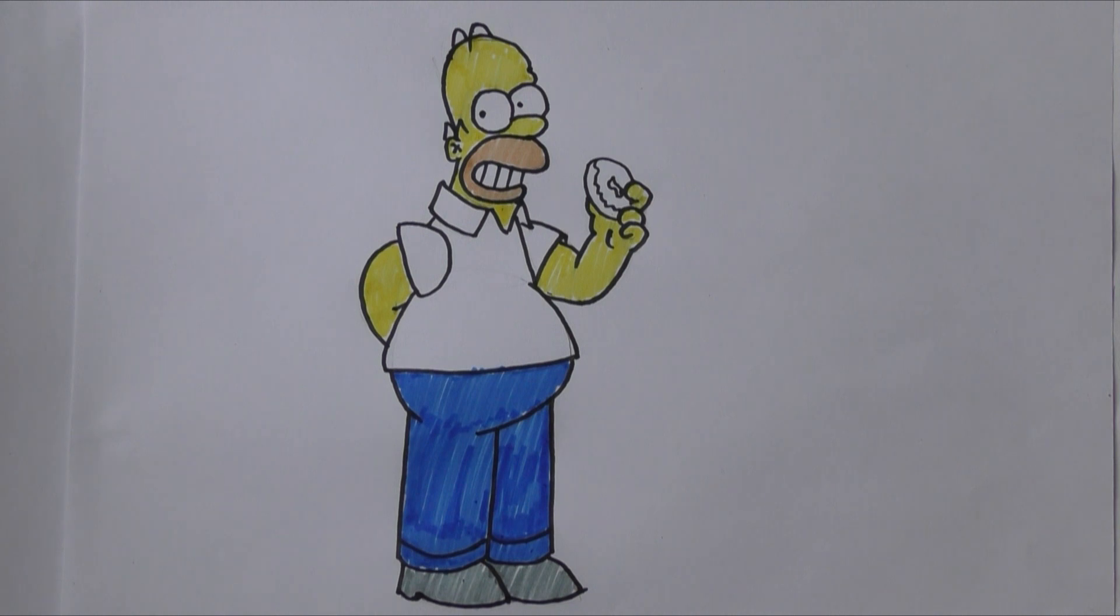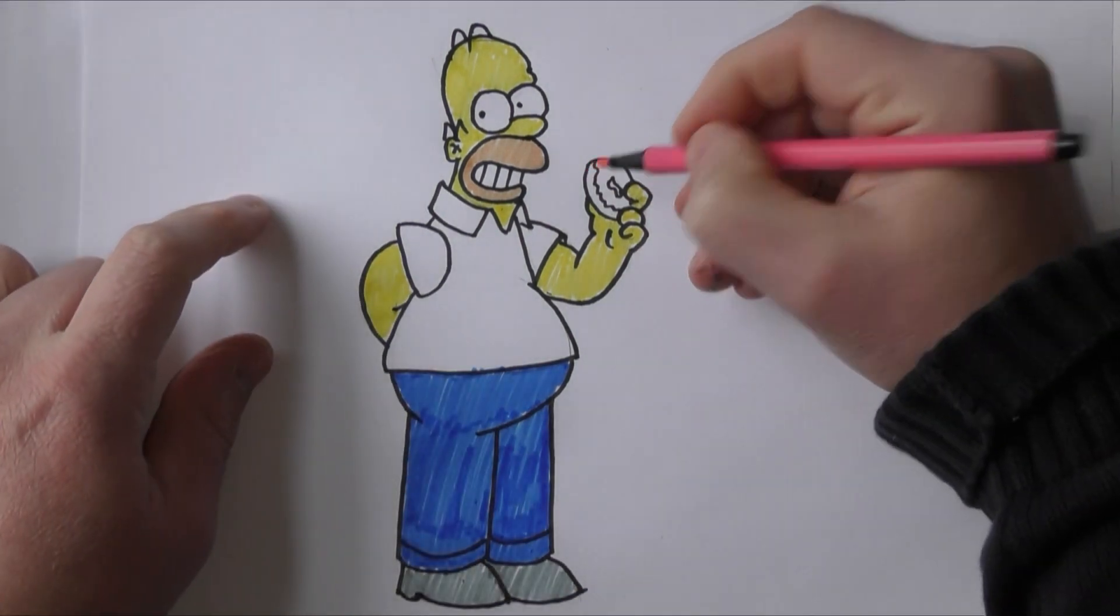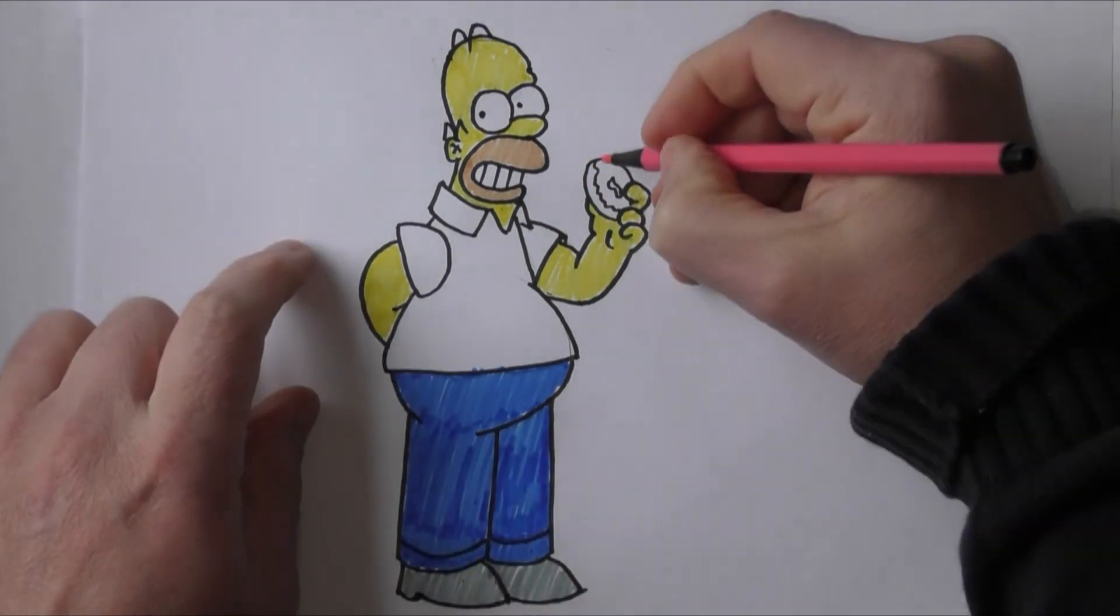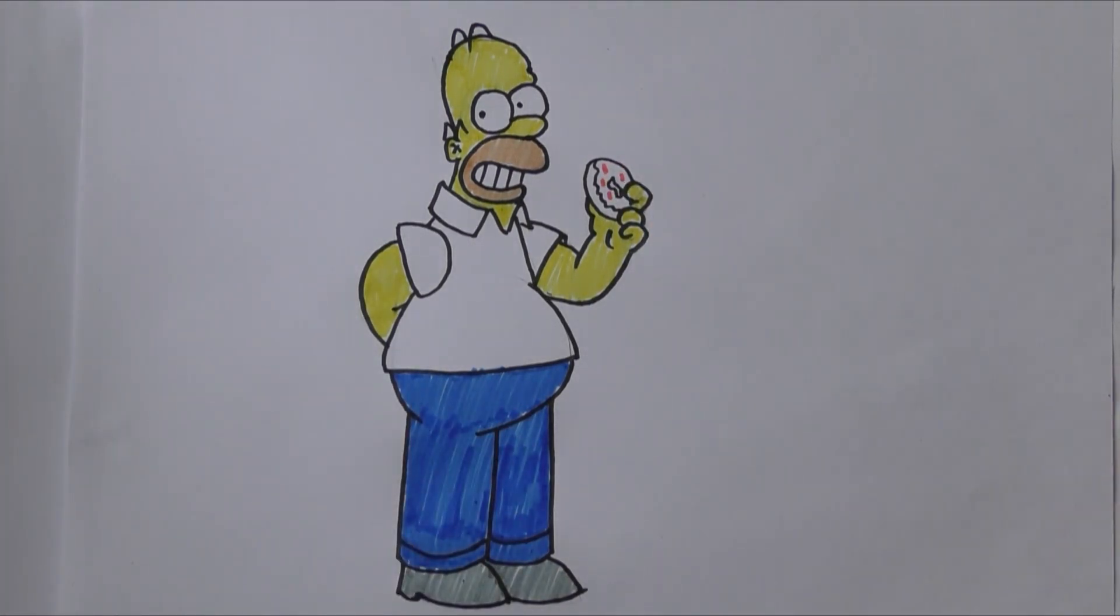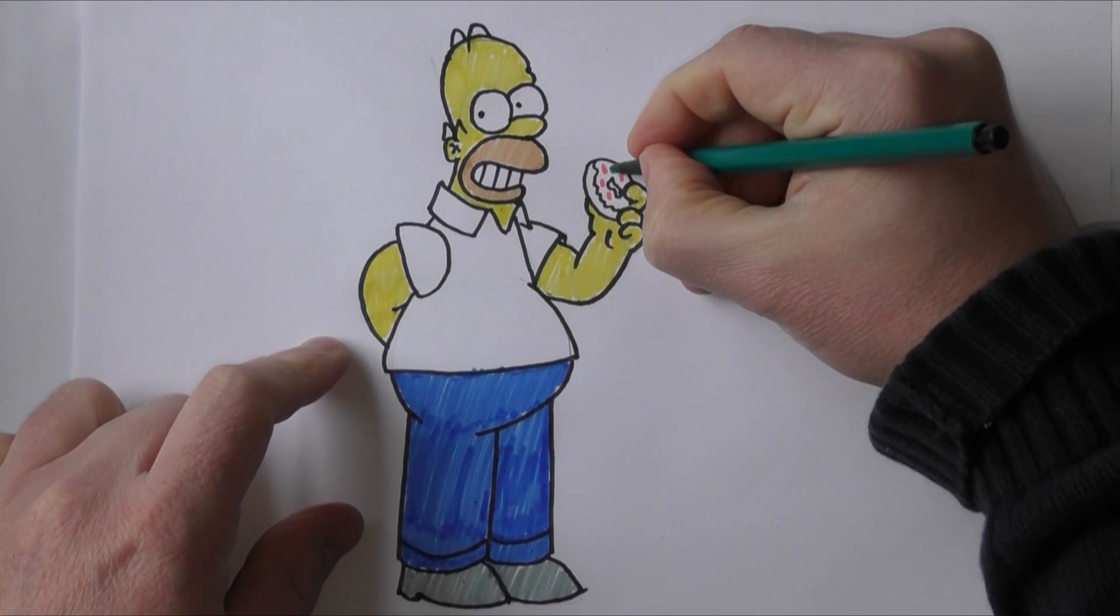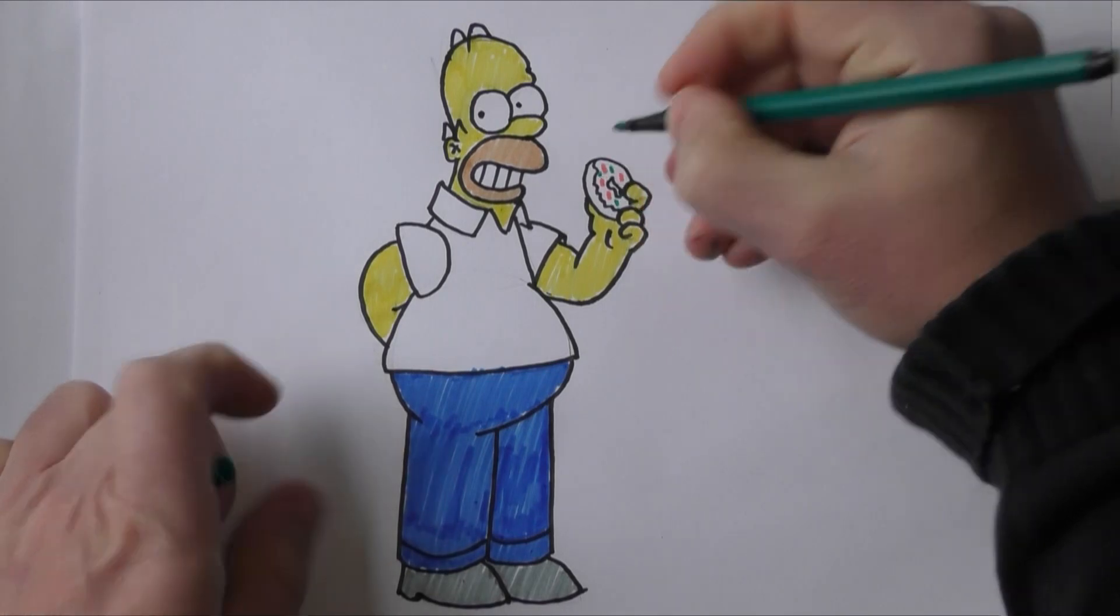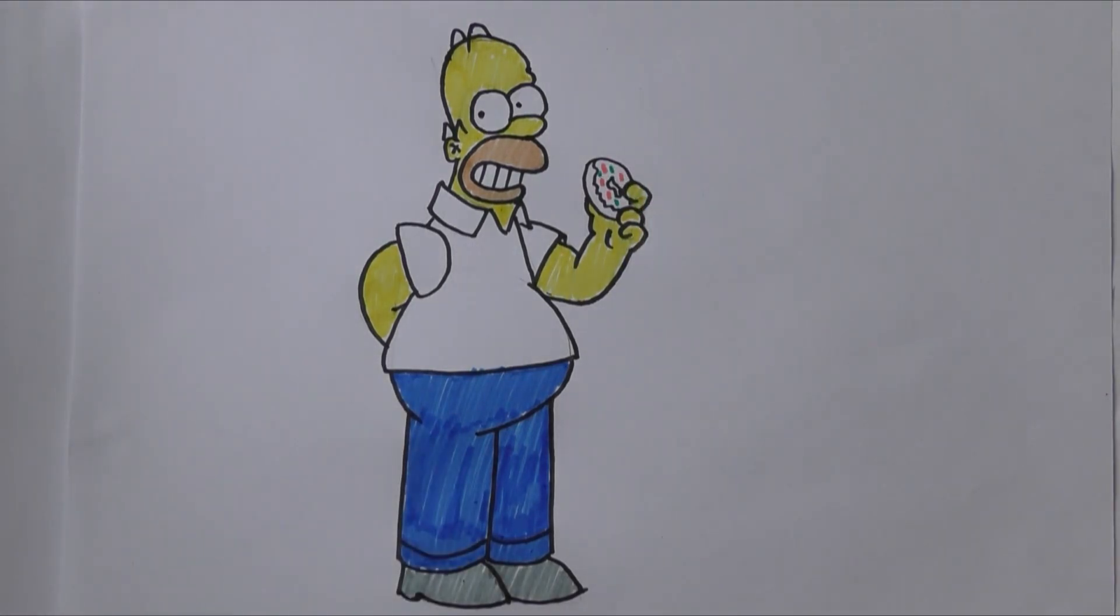And now I'm just going to color in the donut, so we'll do some pink sugar bits on the donut there, and maybe a couple of green ones as well with the green pen. And a couple of, one, two, three of those.